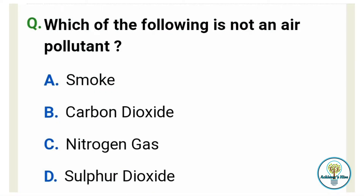Which of the following is not an air pollutant? Option A: Smoke. Option B: Carbon dioxide. Option C: Nitrogen gas. And option D: Sulphur dioxide. And the correct answer is option C, Nitrogen gas.